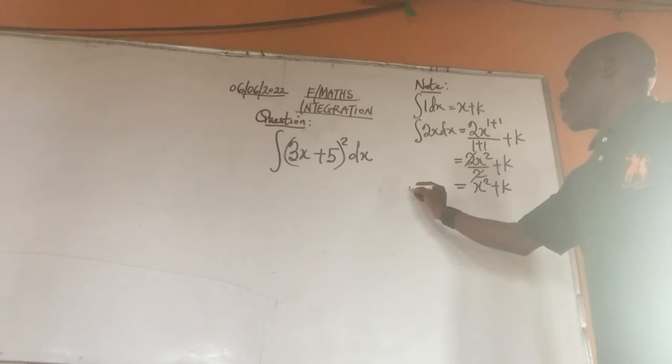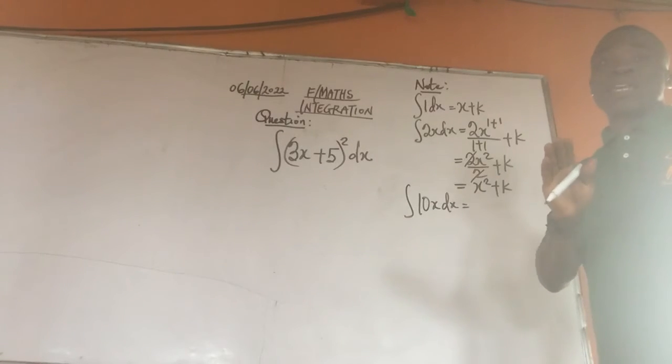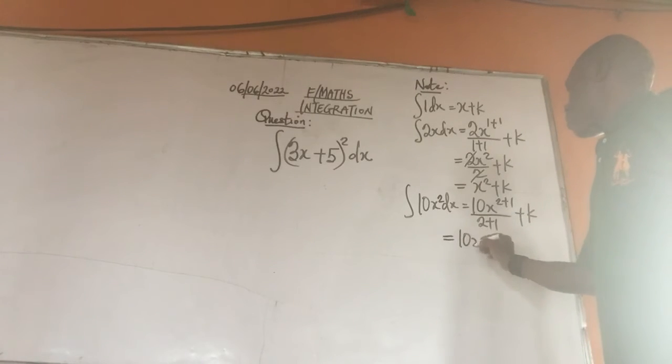Now let's say for example that we are asked to integrate 10x squared dx. Let me combine this to 10x squared. Then this will give us 10x. Then we add 1 to the 2 that is here. That will be 2 plus 1. The same 2 plus 1 we are meant to bring it down, that will be 2 plus 1, then plus the constant that we are having. 2 plus 1 will give us 3. This will now be 10x raised to the power of 3 over 3 then plus the constant. So this is how we integrate something that has to do with something like this.